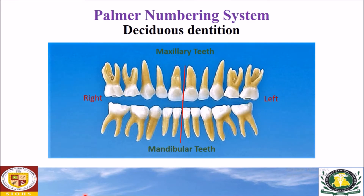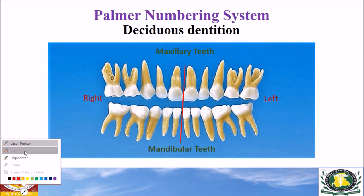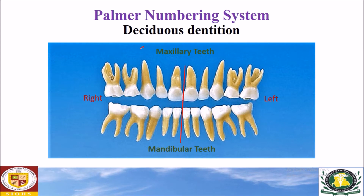Now we will do some exercises on the deciduous dentition. This is a complete deciduous dentition — 10 teeth in the upper arch and 10 in the lower arch. The red line indicates the midline, this is the right side, and this is the left side. The maxillary right canine uses the alphabet C in the Palmer notation system.